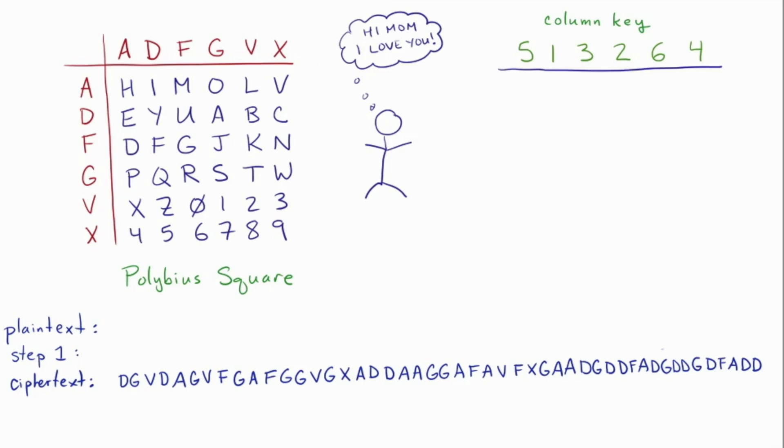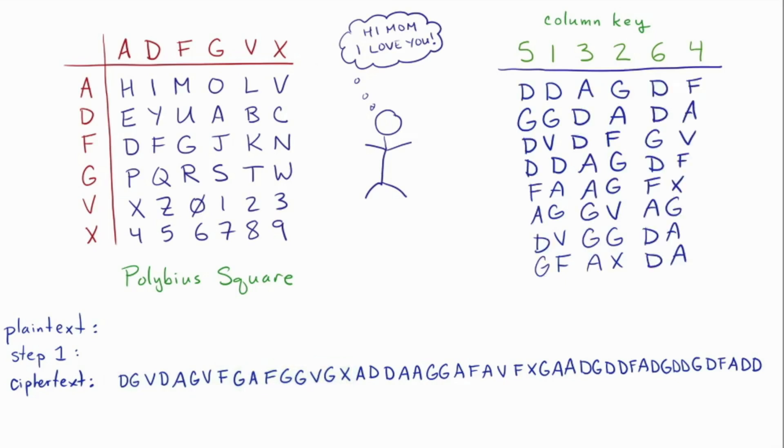Step one is you're going to fill the columns in according to the ciphertext. You're going to have to check how long the ciphertext is to figure out how long the columns are. So that's a slight hitch there, but anyway, we'll write them into the columns chunk by chunk. And now we can read them off row by row.